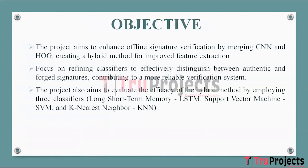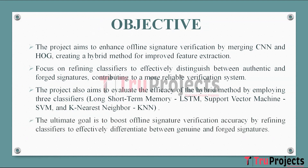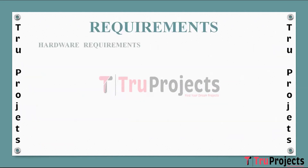The hybrid method's effectiveness will be evaluated using LSTM (Long Short-Term Memory), SVM (Support Vector Machine), and KNN (K-Nearest Neighbor) classifiers, allowing a comprehensive assessment of its performance and suitability for signature verification. The project's ultimate objective is to achieve heightened accuracy in differentiating authentic and forged signatures, showcasing the potential for a highly precise offline signature verification system.